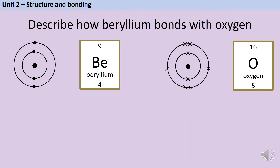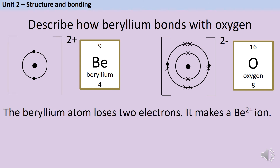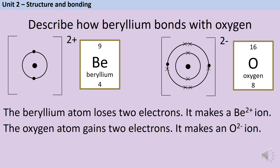Here's a similar example: how beryllium from group two bonds with oxygen from group six. Being in group two, beryllium has two electrons on its outer shell and needs to lose both of them, so each one is donated to the oxygen atom. This forms an oxide ion with a two minus charge, and the beryllium left over is now an ion with a two plus charge. So: the beryllium atom loses two electrons and makes a Be²⁺ ion, and the oxygen atom gains two electrons and makes an O²⁻ ion.